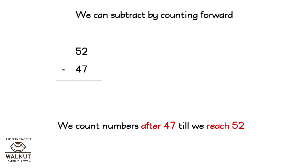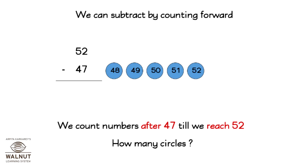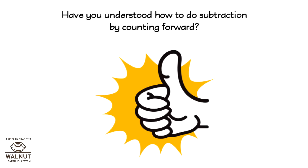Let's now subtract 52 minus 47. We count numbers after 47 until we reach 52: 48, 49, 50, 51, and 52. How many circles is that? 5. So 52 minus 47 is equal to 5. Have you understood how to do subtraction by counting forward? Then good job!